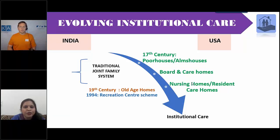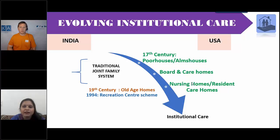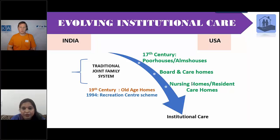Board and care homes are licensed 24-hour care properties, often within someone's personal home, providing basic levels of care and needs. These homes were then converted into something more public and permanent — state and federally funded. By 1965, resident care homes and nursing homes were a solid fixture.